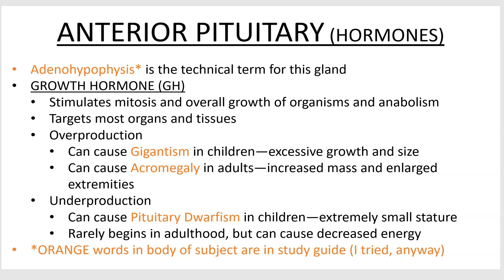Overproduction of growth hormone in children causes gigantism — they grow proportionally but very large. If overproduction continues into adulthood it's called acromegaly, where most bones won't grow normally but get thicker, and dermal bones grow, resulting in bigger hands, larger shoe size, and larger hat size. Underproduction as a child can cause pituitary dwarfism, one particular cause of small stature.